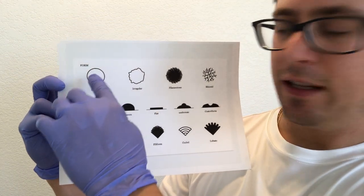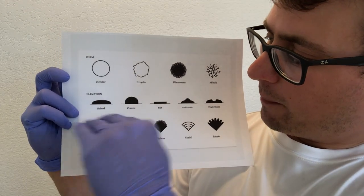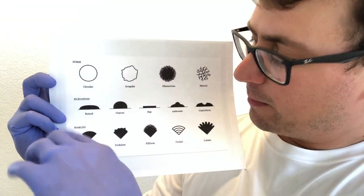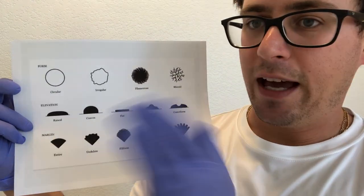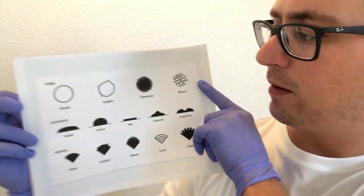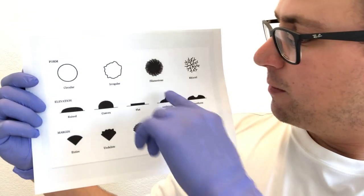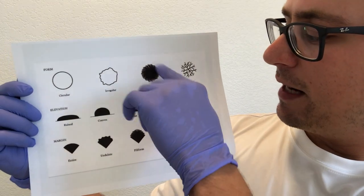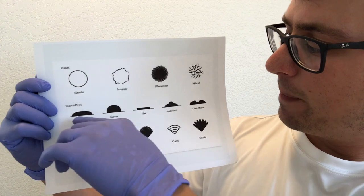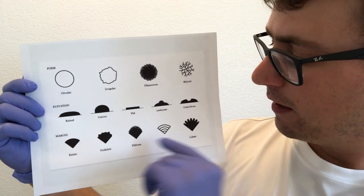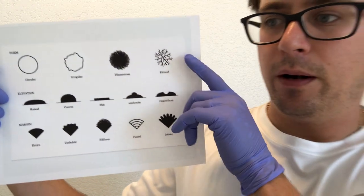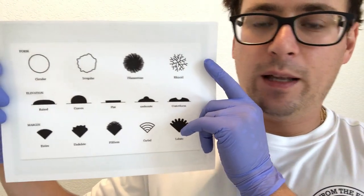You can see it breaks it down into form, the elevation of the mycelium, and the margin, which is the area of the edge of the growth. Usually saprobes are filamentous in nature, pretty flat or raised somewhere in this range, and pretty uniform.